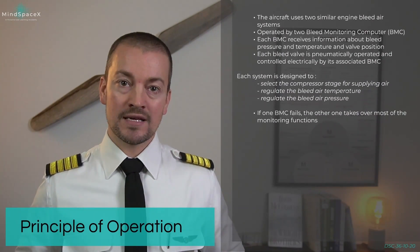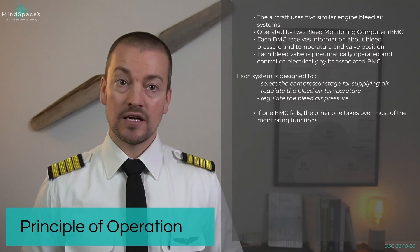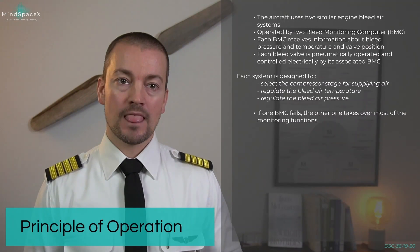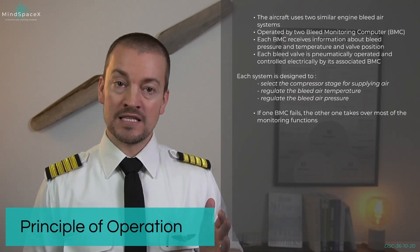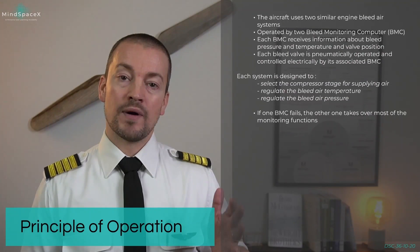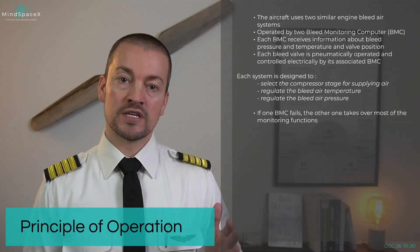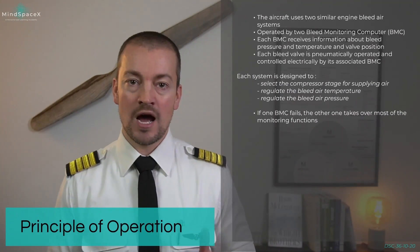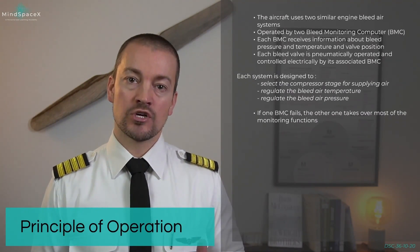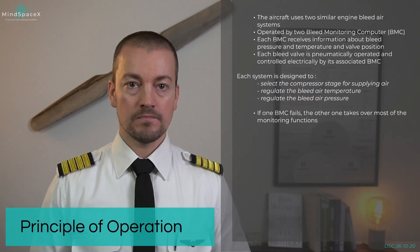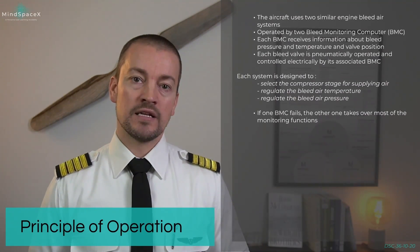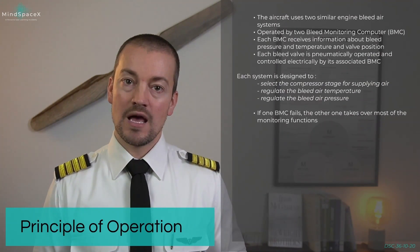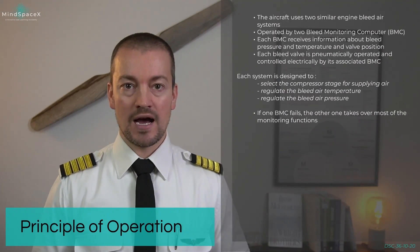Each bleed monitoring system is designed to select the compressor stage from the engine for supplying the air. It normally supplies from the intermediate pressure output, but if that's insufficient due to, for example, low pressure or low RPM on the engine, it will select the higher pressure output in replacement of the intermediate pressure. The BMC and the bleed system also regulate the bleed air temperature and the bleed air pressure output.